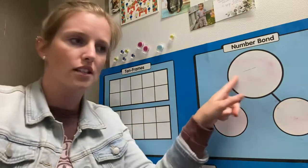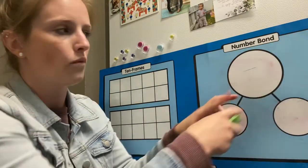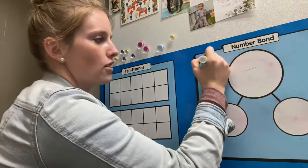This is a tool that we use a lot in addition and subtraction. And so this is what the number bond looks like. There are two parts or there can be more and there's one whole. So this part on top is the whole.